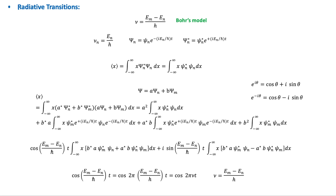Suppose that a system is in a certain quantum state N. The time-dependent wave function psi_N is equal to psi_N times e to the power of minus i·En over H-bar times t. The expectation value of the position of this electron is the integral of x times the complex conjugate of psi_N times psi_N dx. This integral is constant in time because the two functions depend on position only, so the electron does not oscillate and no radiation occurs. This confirms that a system in a specific quantum state N does not radiate, as observed experimentally.